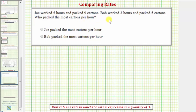We'll begin by setting up their rates based upon the given information. So Joe's rate is nine cartons per five hours. Notice how we do want this rate comparing cartons to hours, not hours to cartons. And Bob's rate would be five cartons per three hours.